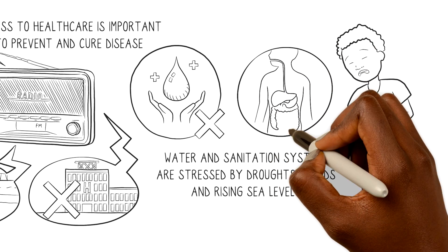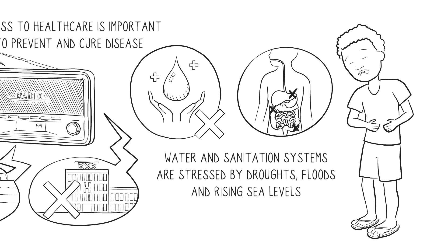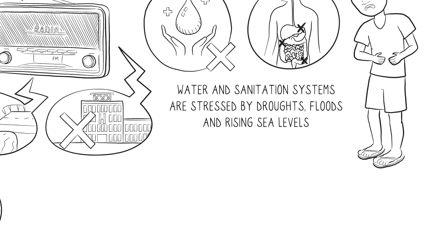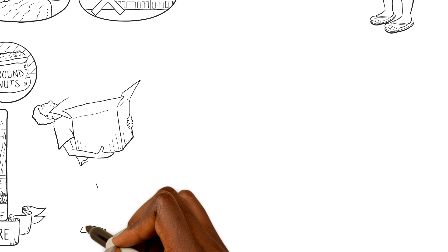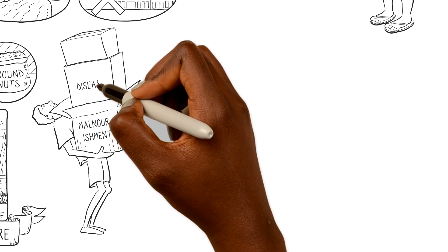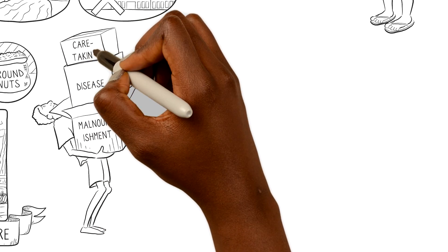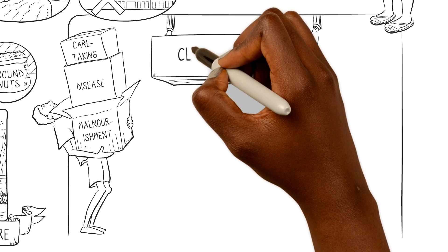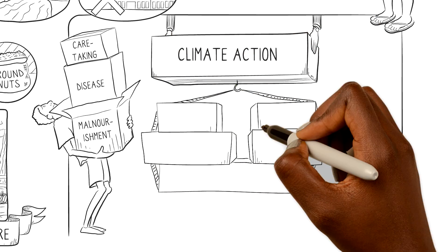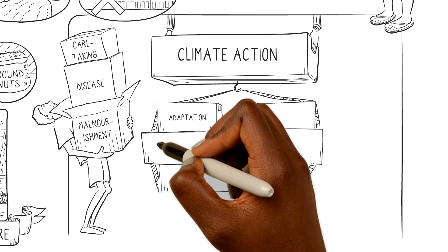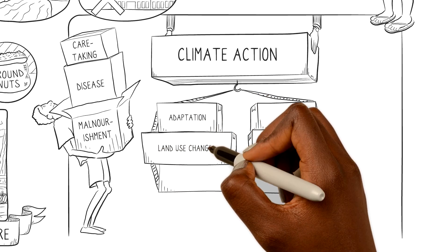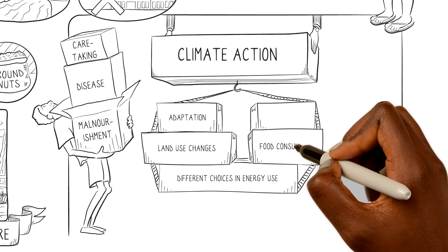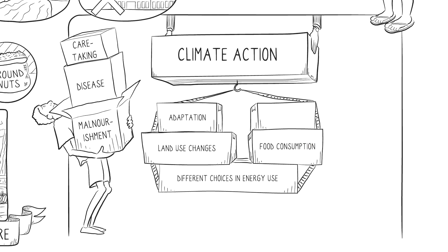Diarrhea reduces the body's capacity to absorb nutrients from food. For people who are weakened by malnourishment and disease, or who are busy taking care of ill community members, it is hard to take climate action, to invest in strategies to adapt to climate change, or make different choices in land use, energy use, and food consumption or livelihoods to mitigate climate change.